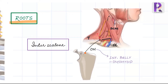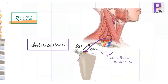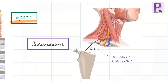The sternocleidomastoid anteriorly, the trapezius posteriorly, and the clavicle inferiorly form the posterior triangle of the neck, divided into the upper occipital and lower subclavian triangles by the inferior belly of omohyoid. The accessory spinal nerve, after supplying the SCM, traverses the occipital triangle and supplies the trapezius — it's a donor brachial plexus nerve. The transverse cervical artery traverses the subclavian triangle and supplies the trapezius. The inferior belly of omohyoid inserts close to the suprascapular notch, so traction on it helps identify the notch and the corresponding nerve. Also note, anterior to the scalenus anterior is the subclavian vein, while posterior to the scalenus medius are two root branches: the long thoracic nerve and dorsal scapular nerve.